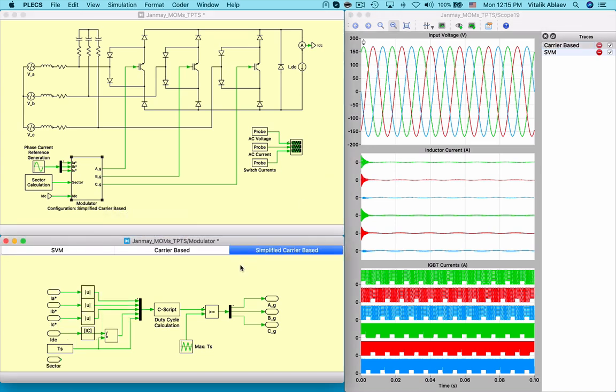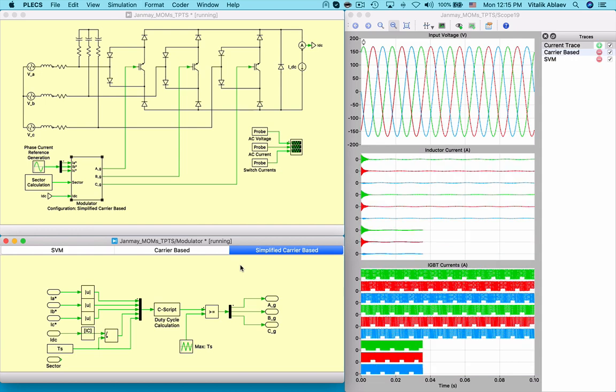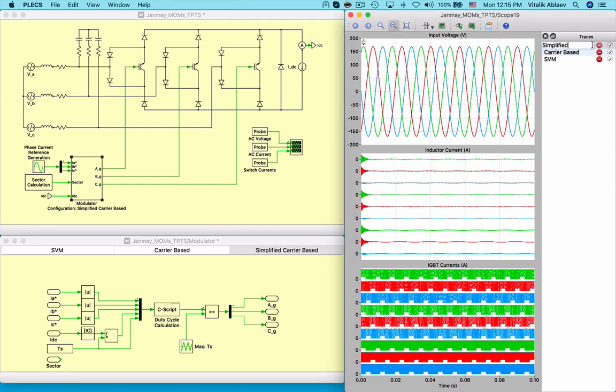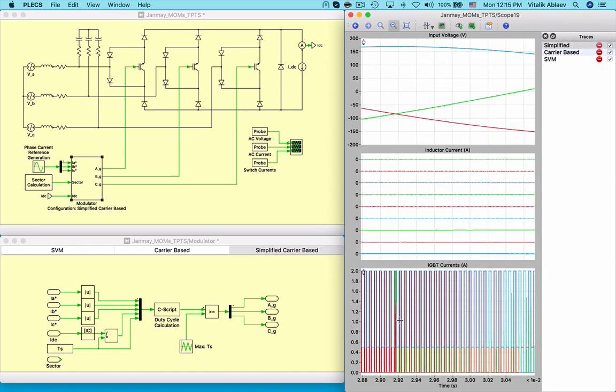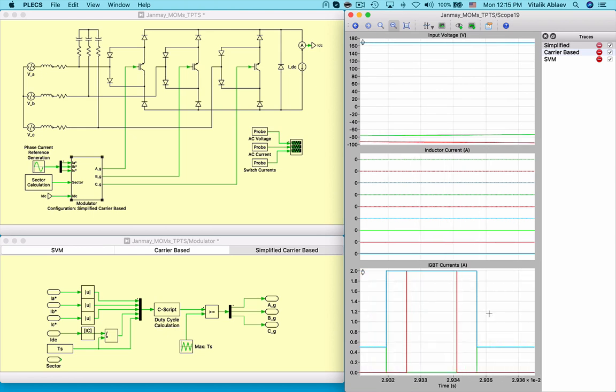For the simplified carrier-based, we are importantly no longer relying on subsectors, and are instead using the generalized derived expressions for on times tmin, tmid, and tmax. As you can see from the scope, the generated switching signals are identical.